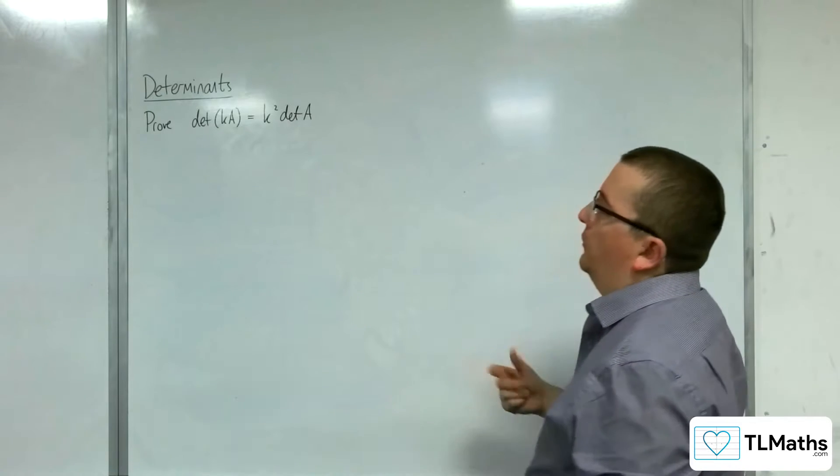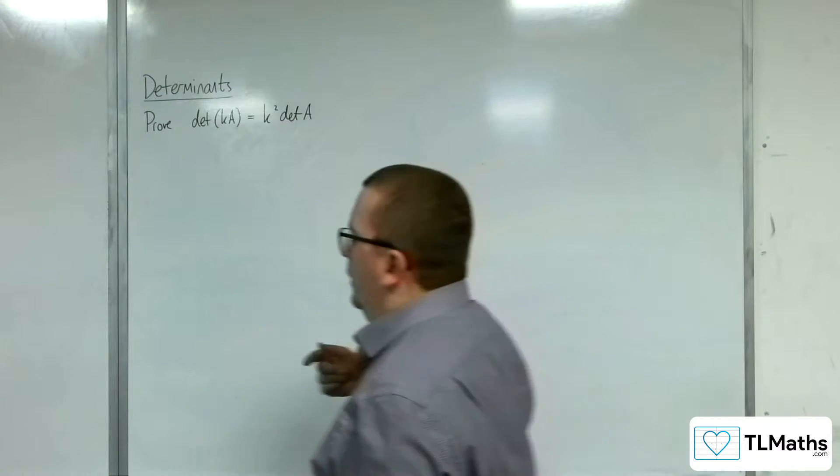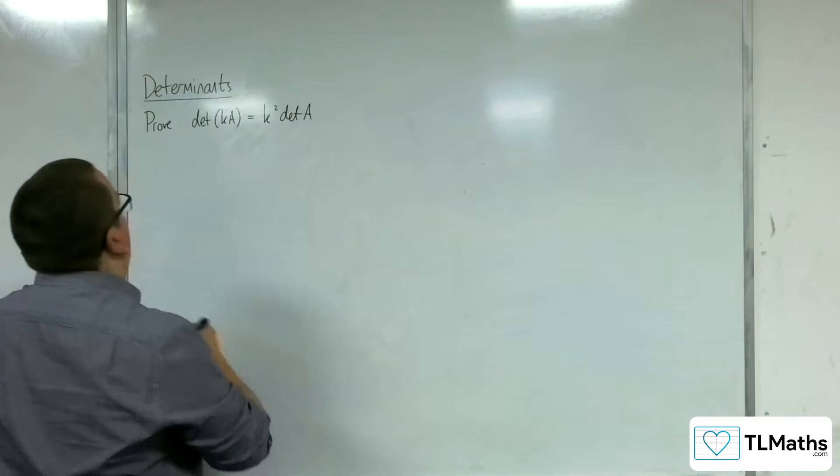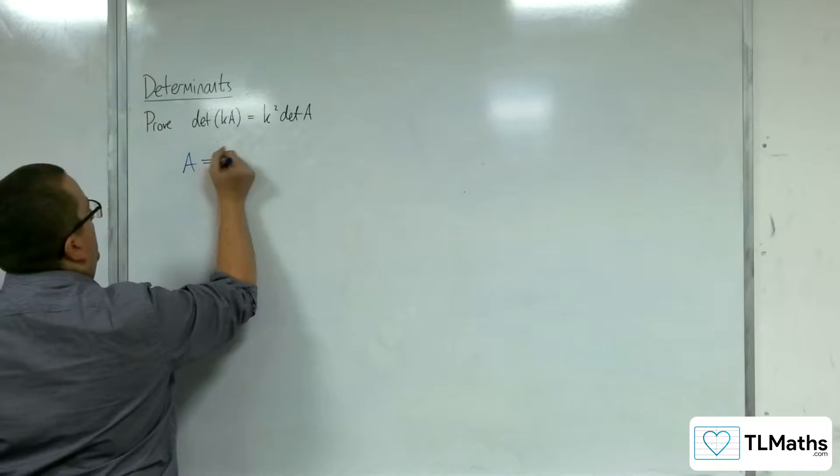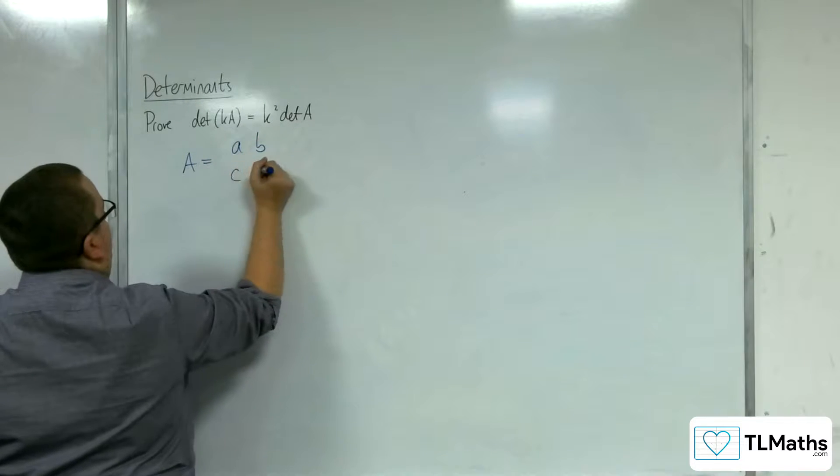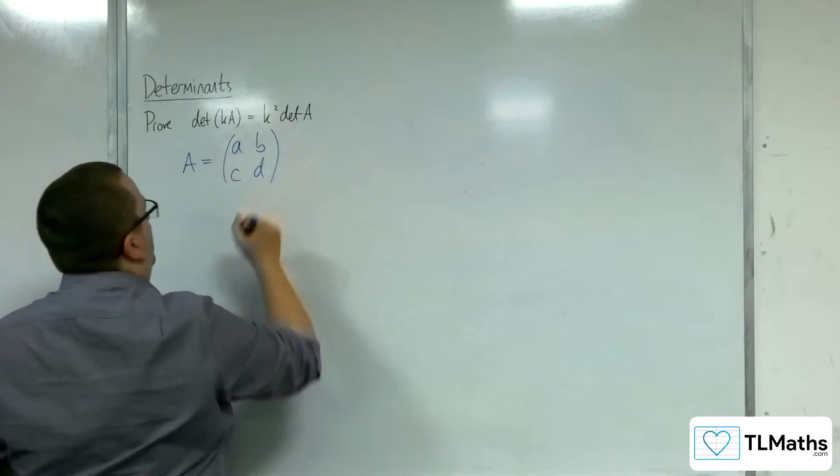So k here is a constant multiplier. So let's set up a matrix A, and let's say it's A, B, C, D. We're just going to do this for 2 by 2 matrices.